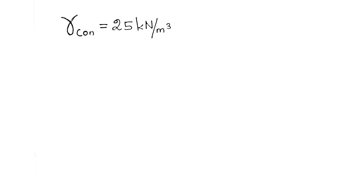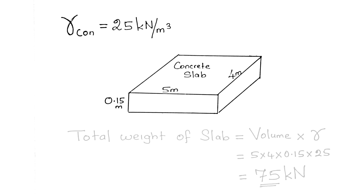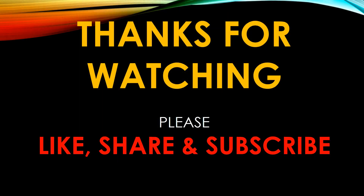Next example: unit weight of concrete is 25 kN/m³. What is the weight of a slab with thickness 0.15 m, length 5 m, and width 4 m? Total weight of slab equals volume times gamma equals 5 times 4 times 0.15 times 25, which gives 75 kN, approximately 7.5 metric tons.